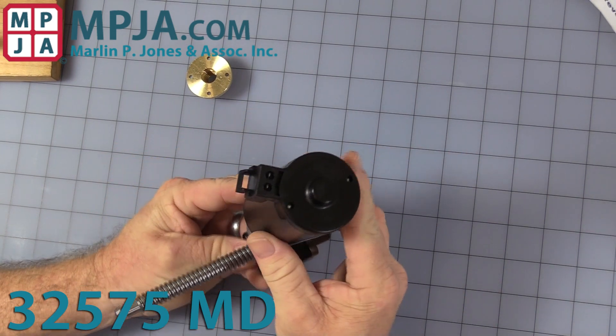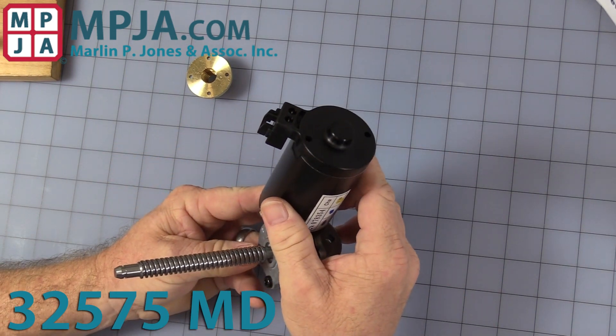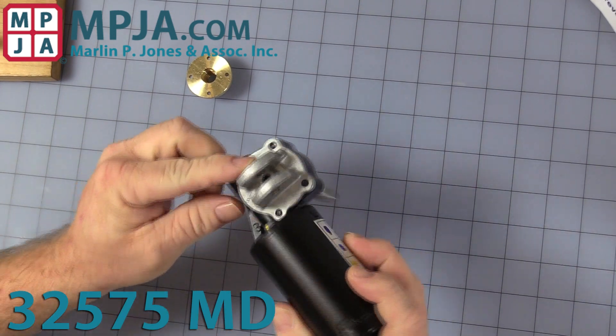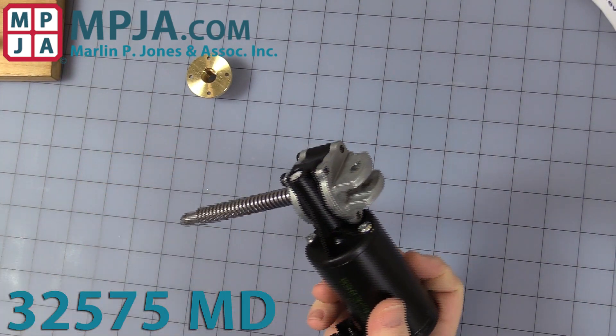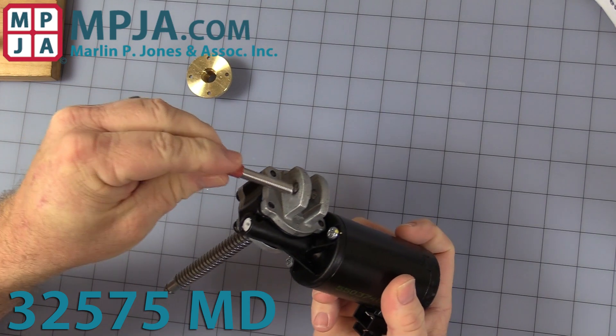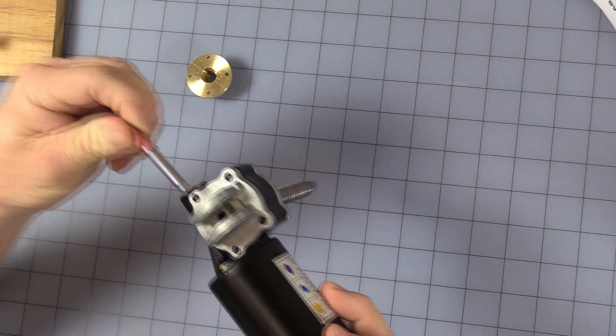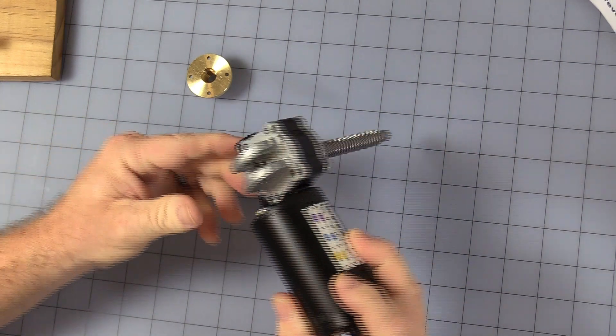But like most of these type things, it has a nice little pivot point on the back. So you've got two different. I have a quarter inch dow, as you can see, so it makes it nice so it can move freely in one position.